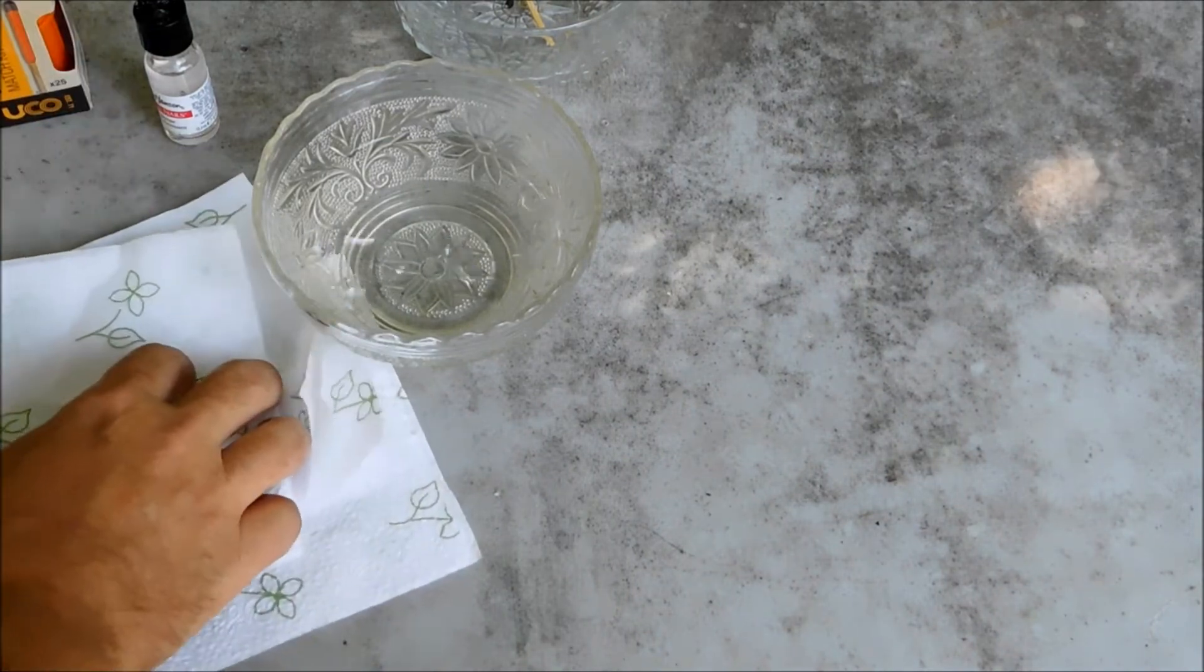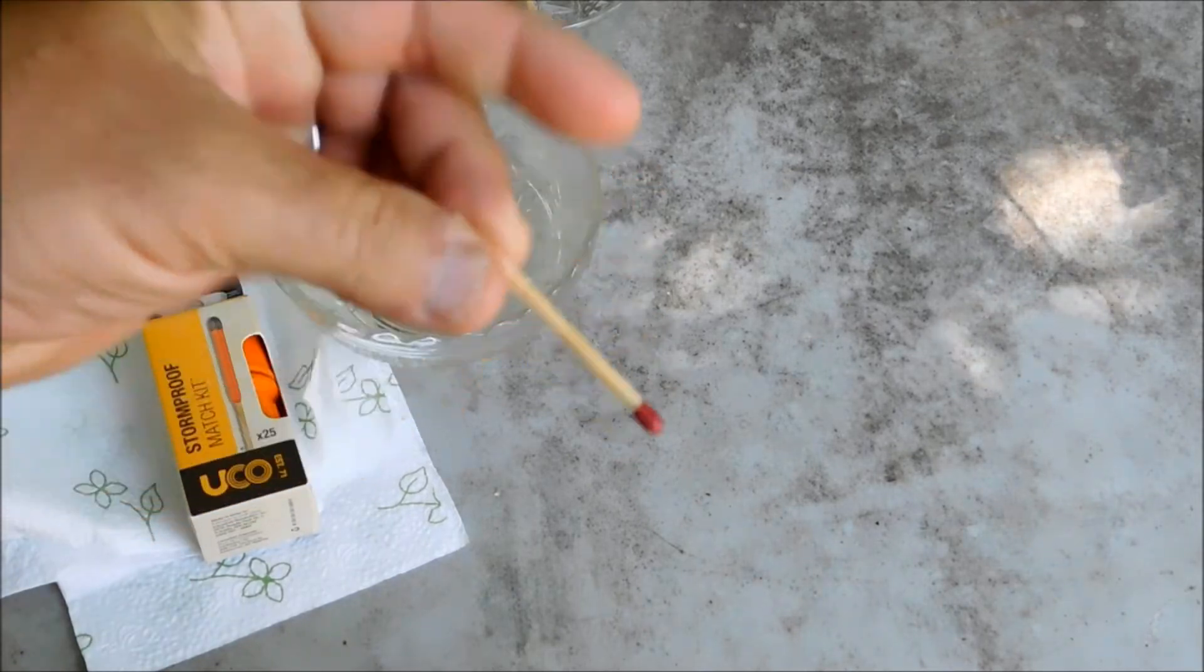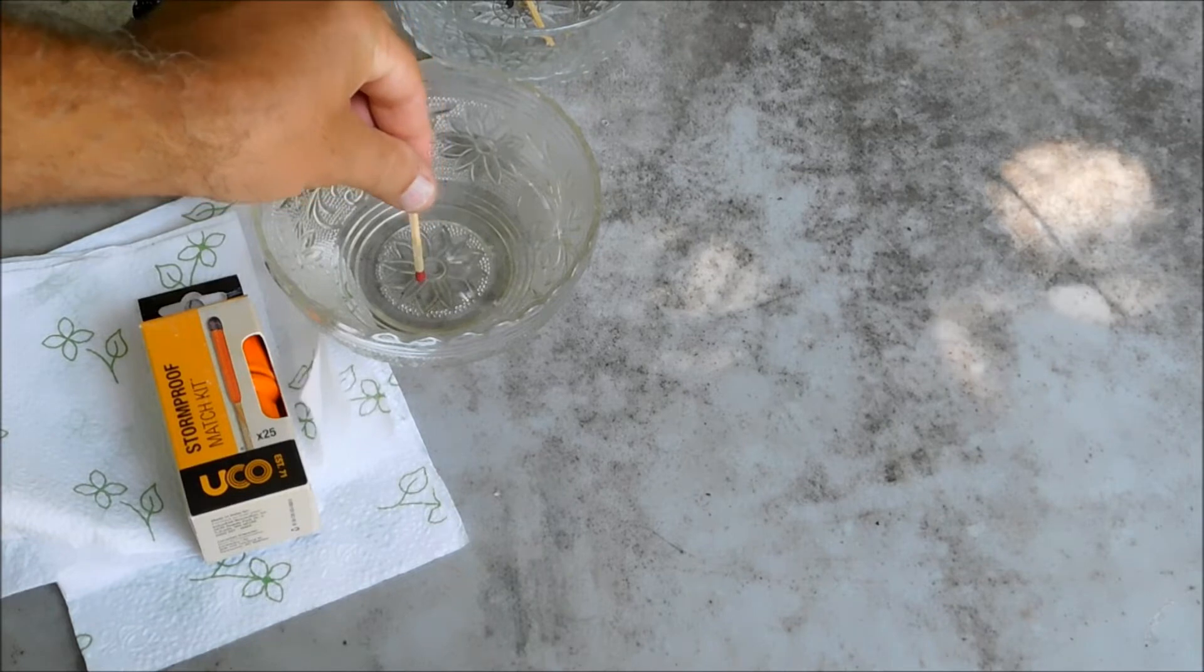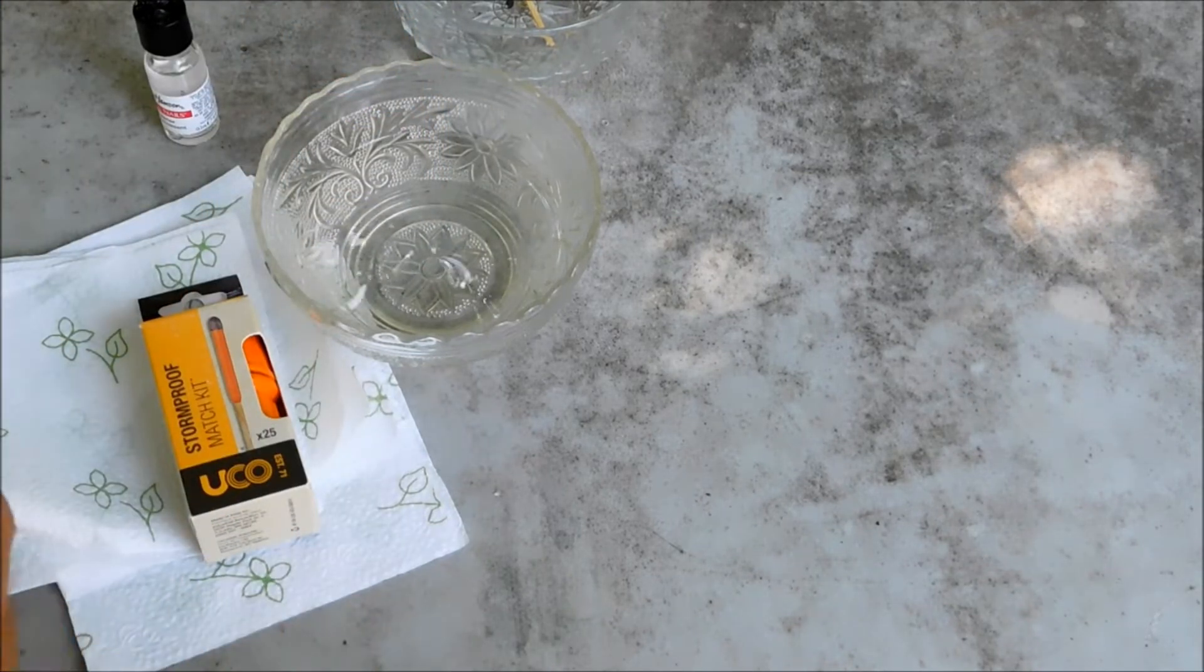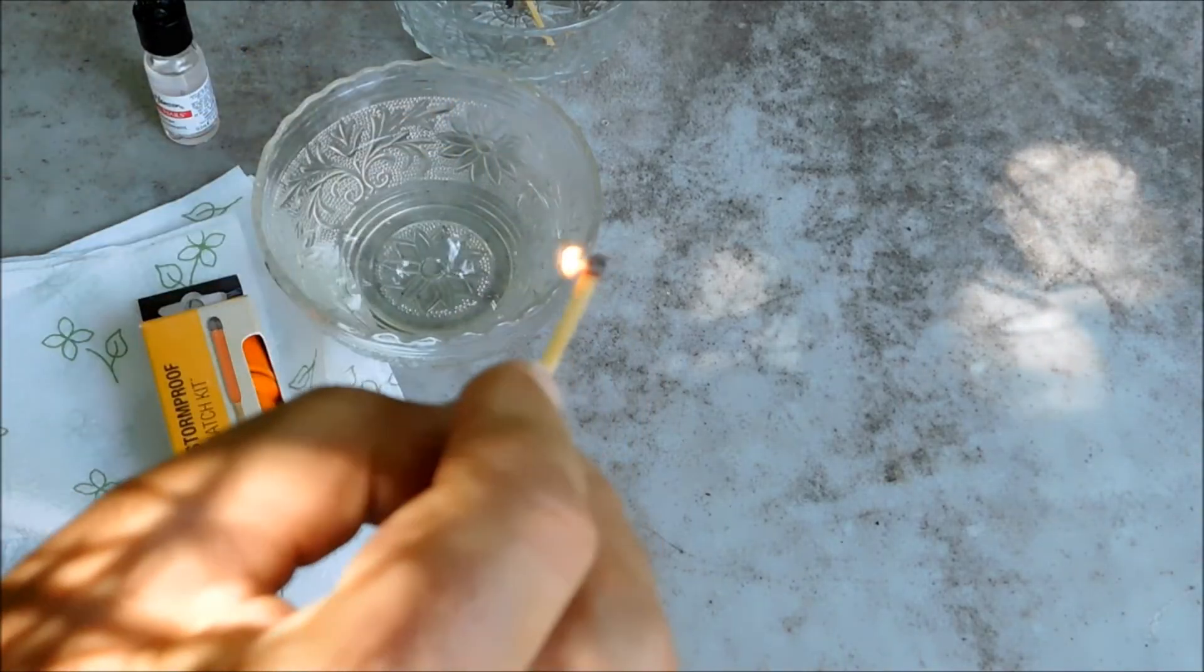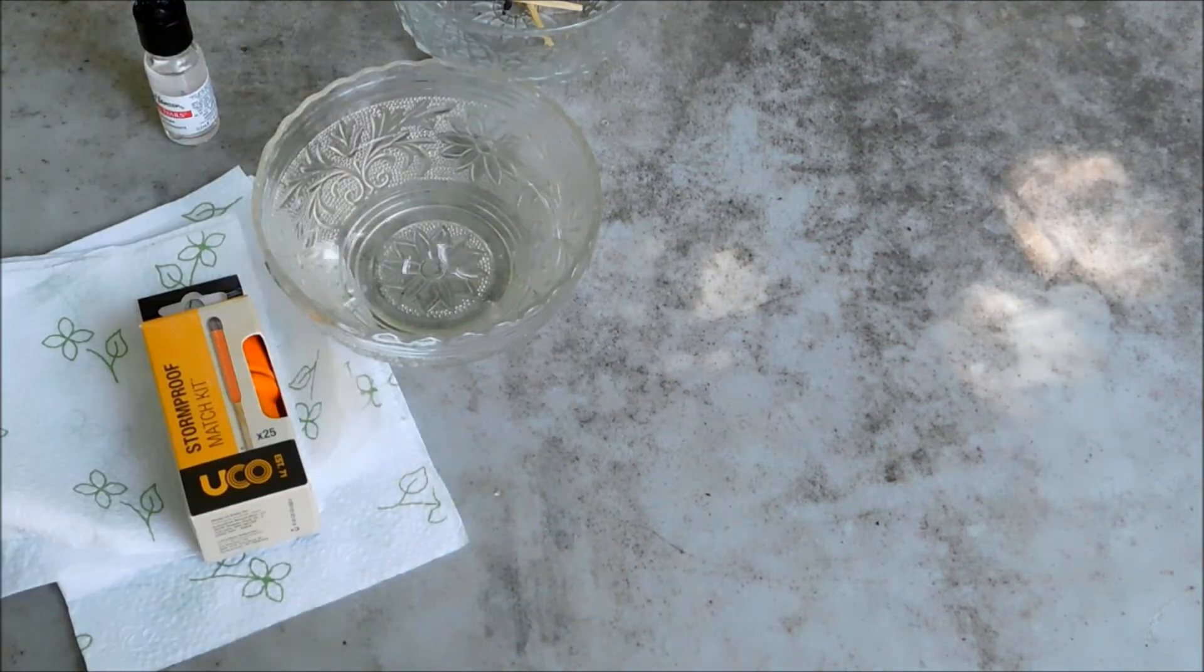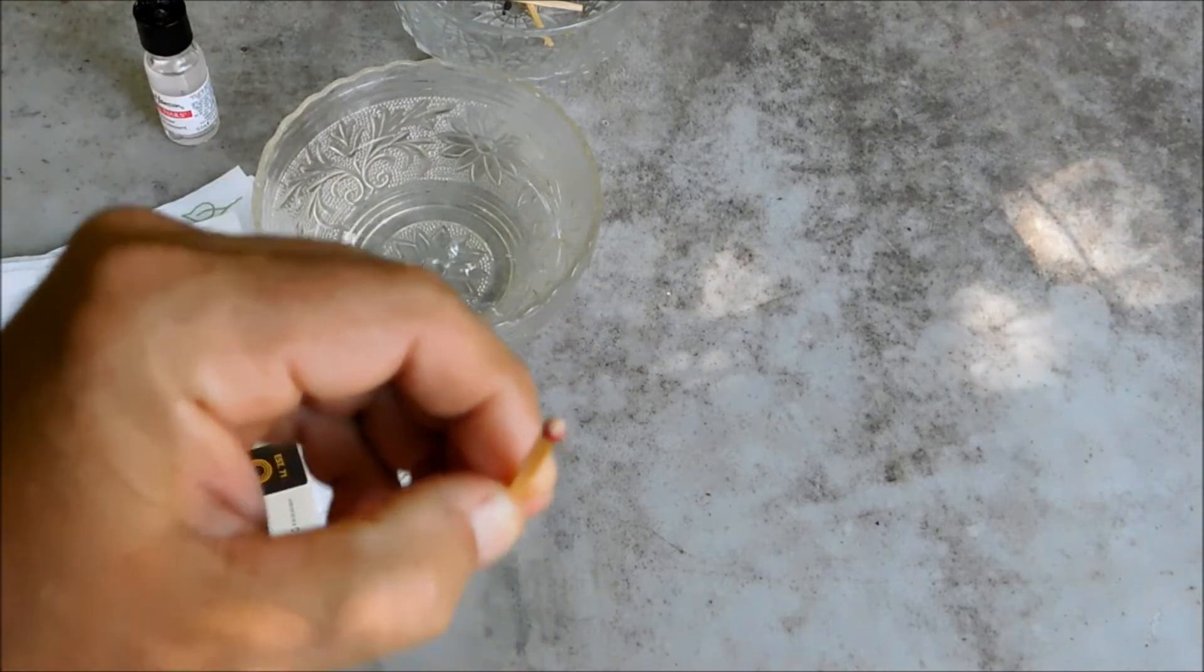So let's go for three for three with the strike-on-box matches. Strike-on-box match. One, two, three, four, five. Flip the heavy water off. We are three for three. We are three for three with the strike-on-box matches. Zero and three for the strike anywhere.